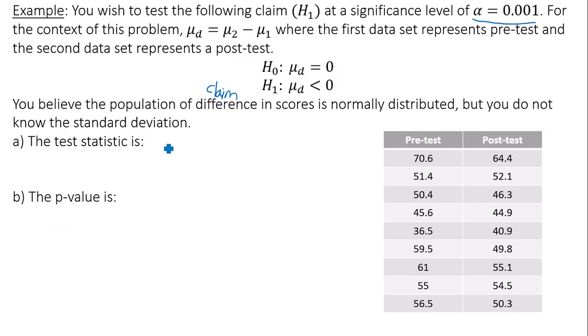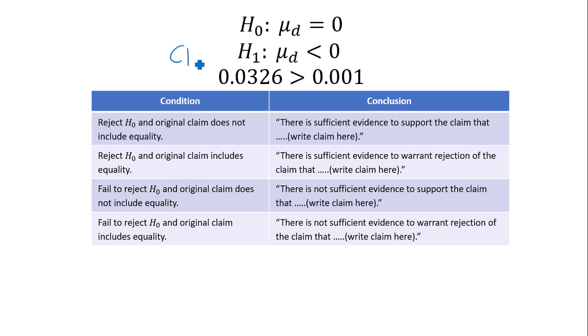So our test statistic is negative 2.14, and our p-value is 0.0326. Let's compare the p-value to alpha. Remember, our claim is the alternative hypothesis. We have our p-value, we have our alpha given to us in the question. The p-value is definitely greater than alpha, which means we fail to reject the null hypothesis.